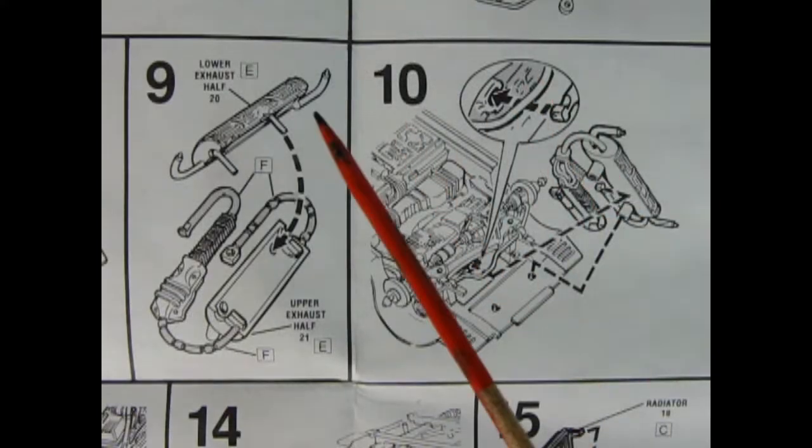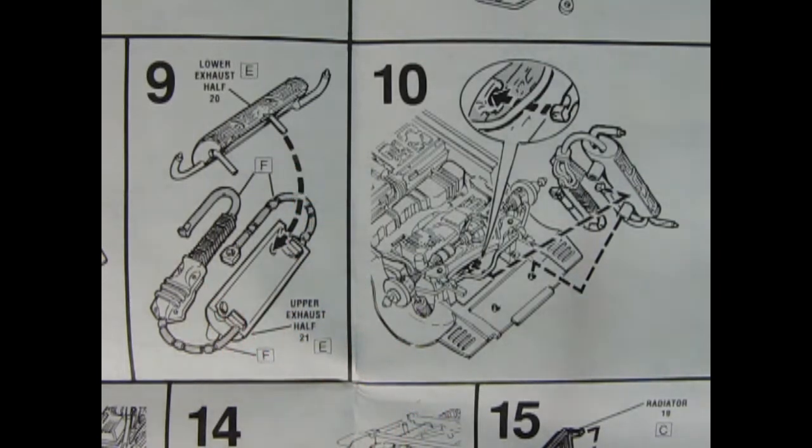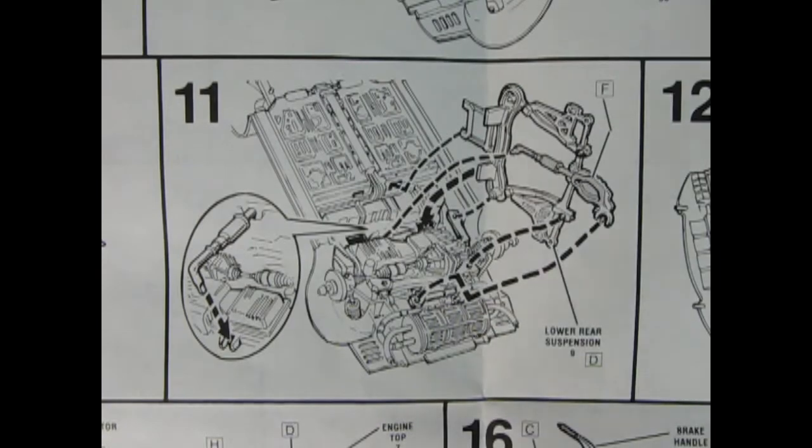Panel seven shows our left rear axle being installed into the body on the engine. And panel eight shows our right rear axle with the spring being hooked into the engine. Panel nine shows the lower exhaust half and the upper exhaust half being put together. And then in panel 10, it shows how that clicks in to the back of our engine block.